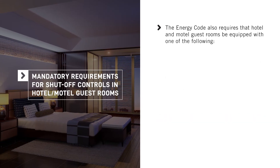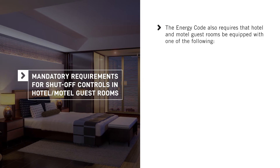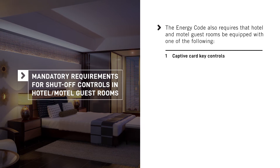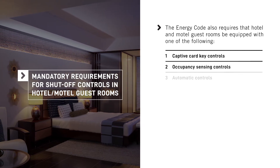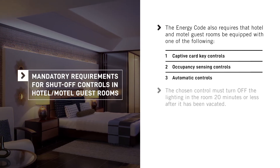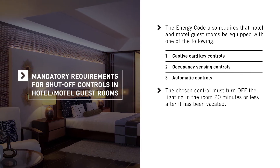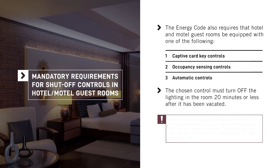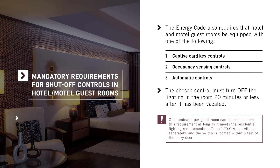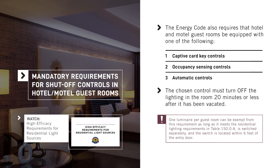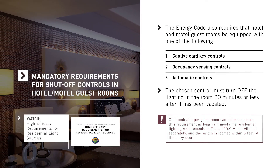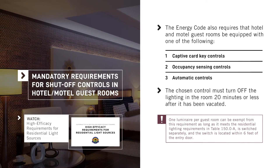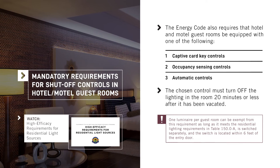The Energy Code also requires that hotel and motel guest rooms be equipped with one of the following: captive card key controls, occupancy sensing controls, or automatic controls. The chosen control must turn off the lighting in the room 20 minutes or less after it has been vacated. However, one luminaire per guest room can be exempt from this requirement, as long as it meets the residential lighting requirements in Table 150.0-A, is switched separately, and the switch is located within 6 feet of the entry door.